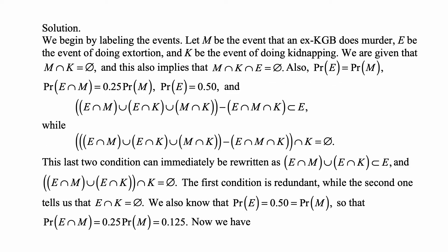Here's the solution. We begin by labeling the events. Let M be the event that an ex-KGB does murder, E be the event of doing extortion, and K be the event of doing kidnapping. We are given that M ∩ K is empty, which also implies that M ∩ K ∩ E is empty. Also, P(E) = P(M). P(E ∩ M) = 0.25 · P(M), and P(E) = 0.50. The set of those doing at least two activities — (E ∩ M) ∪ (E ∩ K) ∪ (M ∩ K) — is a subset of E, while its intersection with K is empty.